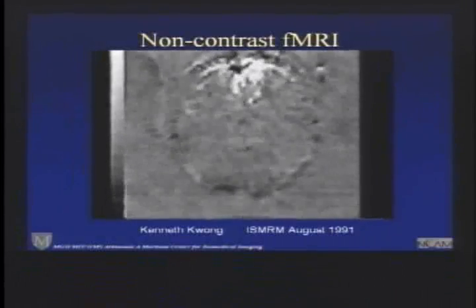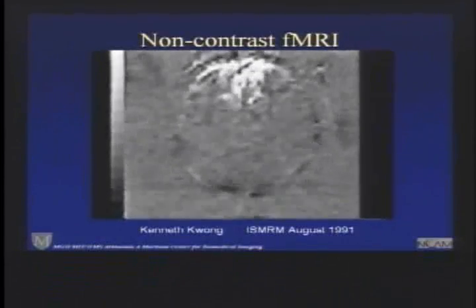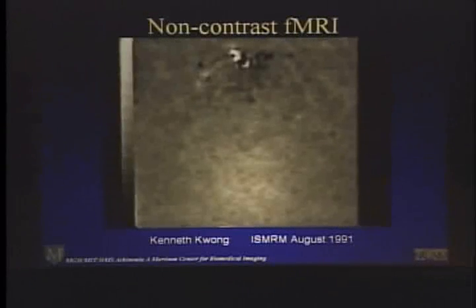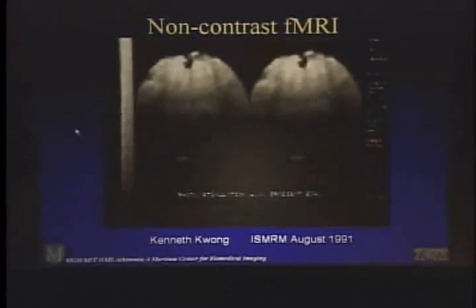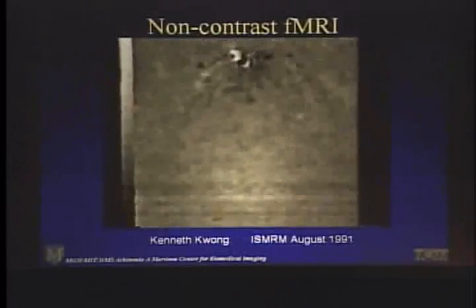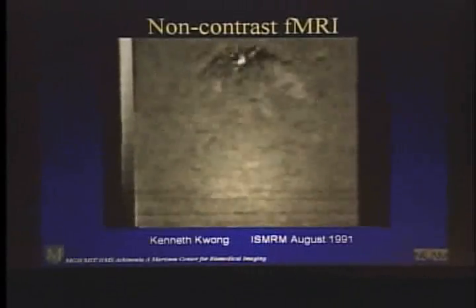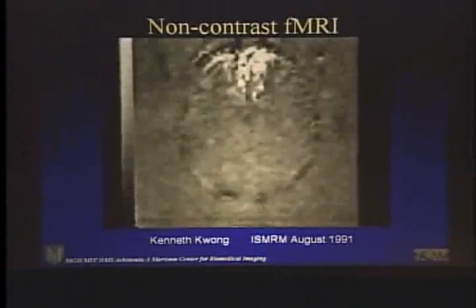we could literally watch the brain turning on. This is a simple experiment where Ken simply put a subject in the magnet — we'll just run the loop one more time — there's the baseline pictures, and then a series of subtractions of subsequent images from that baseline. He was able to show directly the part of the brain that lit up, in this case with a visual stimulus, simple flashing checkerboards.